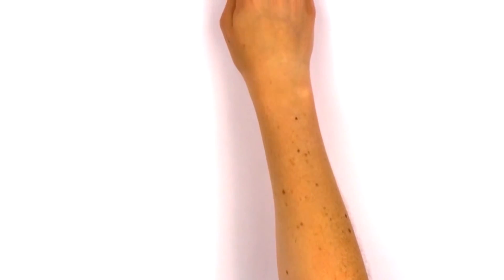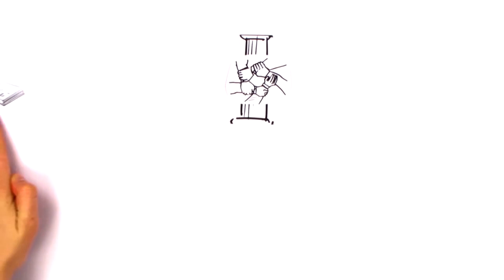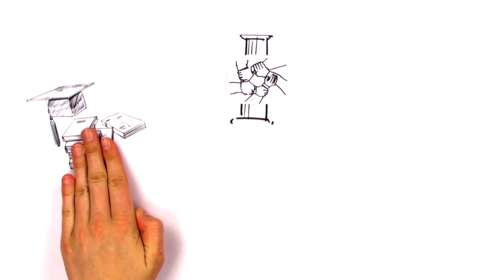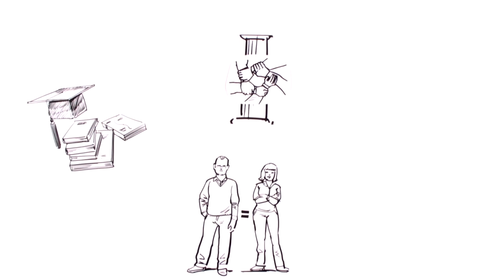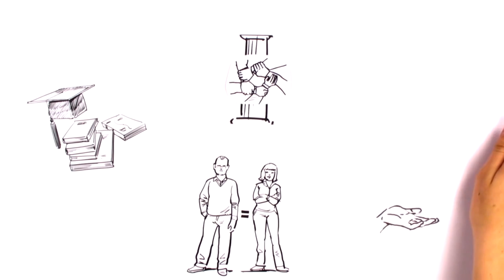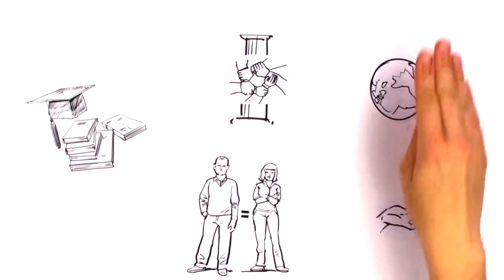The third pillar of sustainability is the social element. Goals here include, for example, better education and training opportunities, equal rights for men and women, fighting poverty, and prosperity for the whole of humanity.